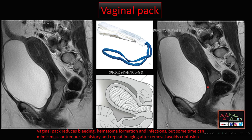This is a similar case after removing the vaginal pack — you can see the normal vagina. Vaginal packs can mimic vaginal or even cervical pathologies. They are used to reduce bleeding, hematoma formation, and infections. Repeat imaging should be done after removing the vaginal packing to avoid confusion. Sometimes a radiopaque thread will be visible on radiographs and CT. Vaginal packs can thus mimic vaginal or cervical pathologies.